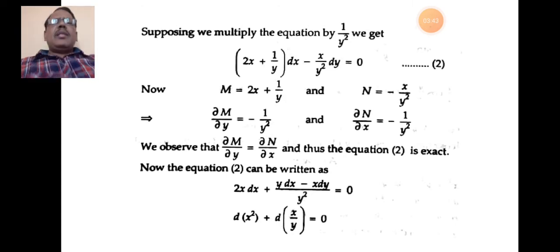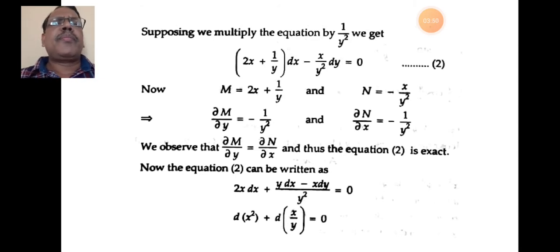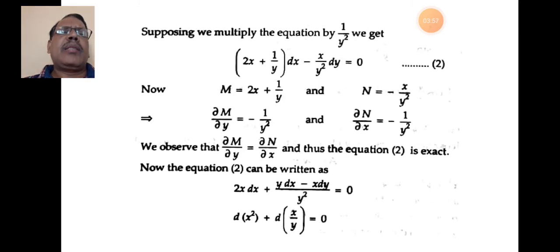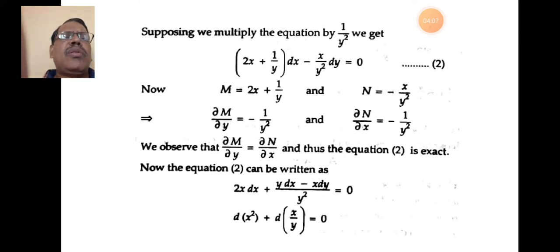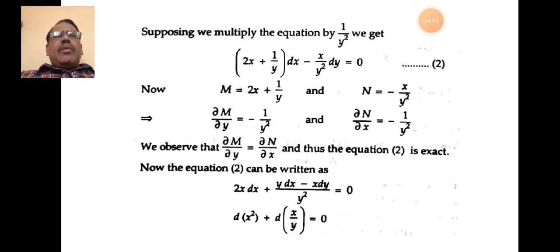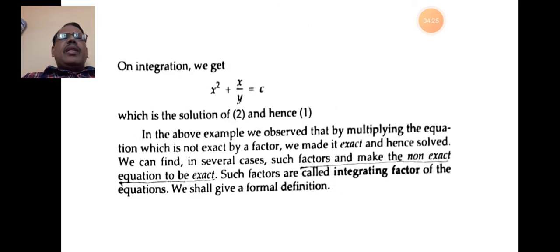The given equation is exact. Now equation 2 can be written as 2x dx + (y dx − x dy)/y² = 0, which is the derivative of x² plus the derivative of x/y equal to 0. On integrating, we get x² + x/y = c, which is the solution of the given differential equation.